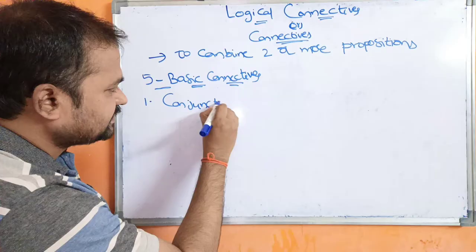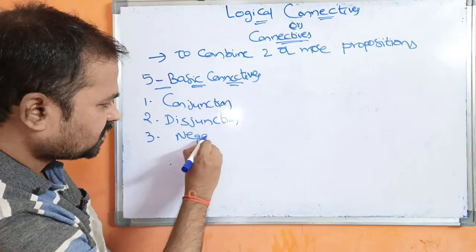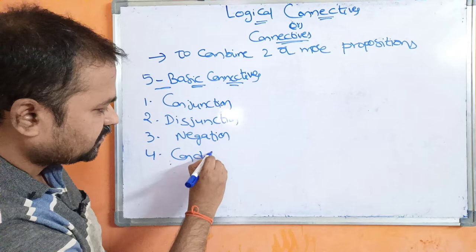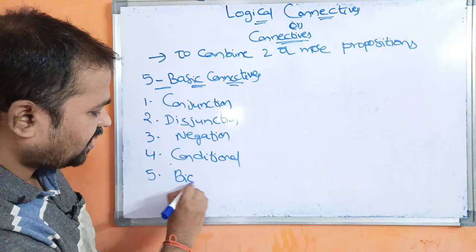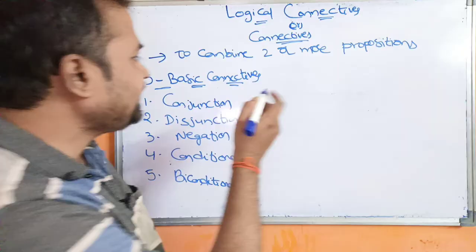The five basic connectives are: the first one is conjunction, the second is disjunction, the third is negation, the fourth is conditional, and the fifth is biconditional. Let us discuss about all these connectives one by one.